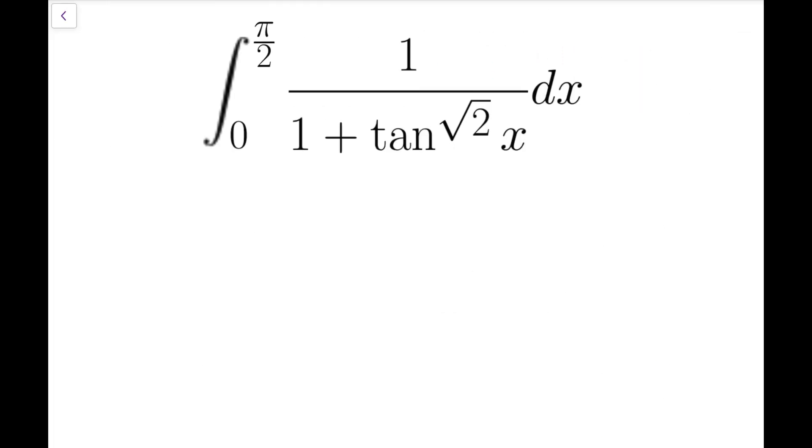The key to solve this problem is to use a clever substitution. Notice that if I let f of x to be equal to this expression, then f of pi over 2 minus x is actually equal to 1 over 1 plus tangent of pi over 2 minus x, all to the power square root of 2.